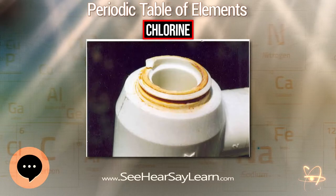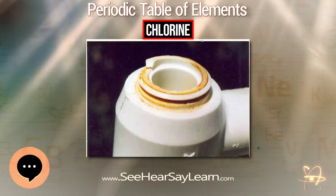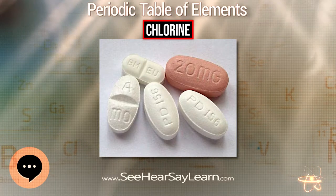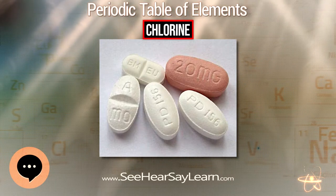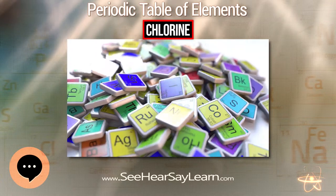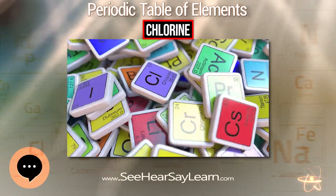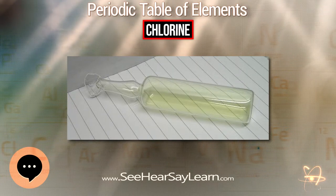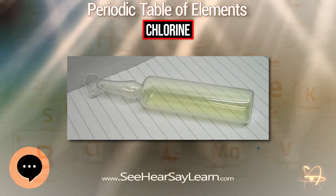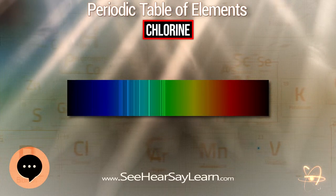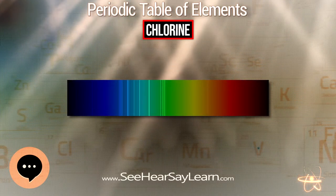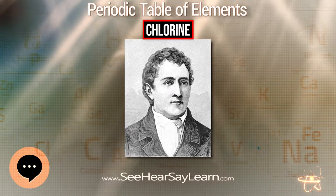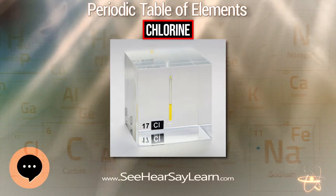The HCl₂⁻ ions are much less stable than bifluoride ions due to the very weak hydrogen bonding between hydrogen and chlorine, though salts with very large and weakly polarizing cations such as Cs⁺ and NR₄⁺ can still be isolated. Anhydrous hydrogen chloride is a poor solvent, only able to dissolve small molecular compounds such as nitrosyl chloride and phenol, or salts with very low lattice energies such as tetraalkylammonium halides. It readily protonates electrophiles containing lone pairs or π bonds.